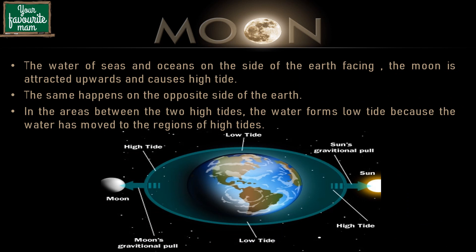The water of seas and oceans on the side of the earth facing the moon is attracted upwards and causes high tides. The same happens on the opposite side of the earth. In the areas between the two high tides, the water forms low tides because the water has moved to the region of higher tides.